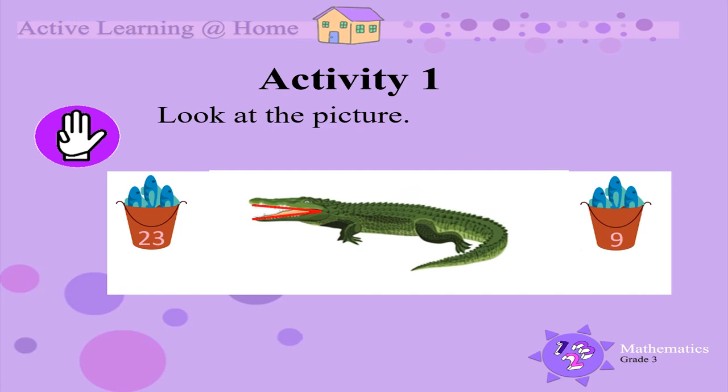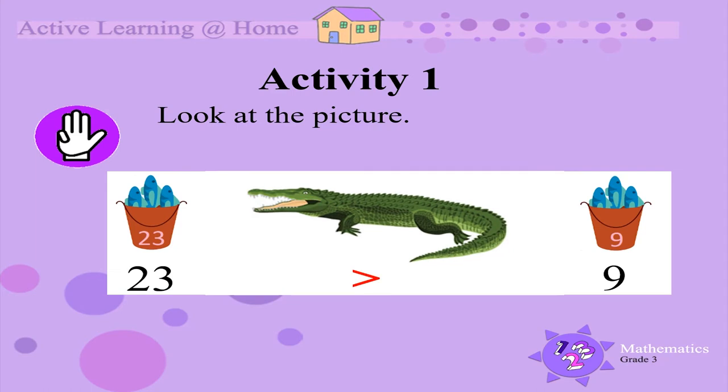23 fish is more than nine fish, so the hungry crocodile will choose the bucket with more fish. We say that 23 is greater than nine. The sign that looks like the crocodile's open mouth faces 23 because the hungry crocodile goes to the bucket with the most fish.